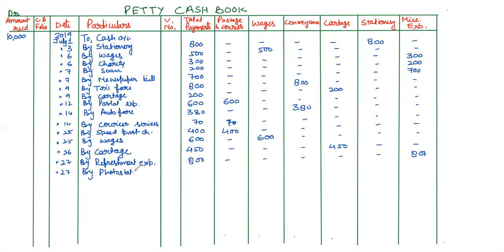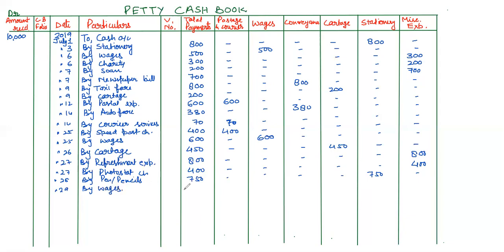On the 28th, we are buying pen and pencils — by pen and pencils. These are part of stationery; 750 rupees will come in the total column and then 750 will come in the stationery column also. On the 29th, we are paying wages — by wages, 300 rupees will come in the total expenses column and in the separate wages column. The last entry is on the 31st — loading charges. These are one of the transportation expenses; loading charges 150 rupees, and this will come in the cartage column.